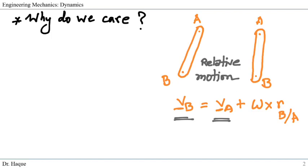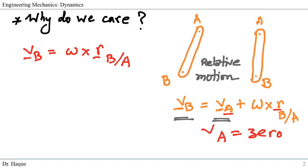If we can find a point A in a body whose velocity is zero, the equation simplifies to vB equals ω×rB/A. This is the benefit: if we can find a point on the body with zero velocity, we can use that point as our center of zero velocity.